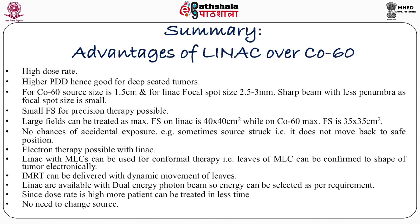Large fields can be treated with linac, as the maximum field size on linac is 40 by 40 centimeters, while in cobalt-60 the maximum field size is 35 by 35 centimeters. There are no chances of accidental exposure — for example, sometimes the source gets stuck in cobalt-60 and does not go back to the safe position. Such situations do not arise in linac because there is no natural or artificial radioactive source inside. Once we switch on the machine, radiation starts coming out, and as we switch off the machine, radiation stops.